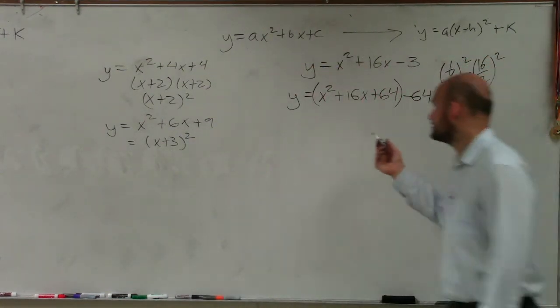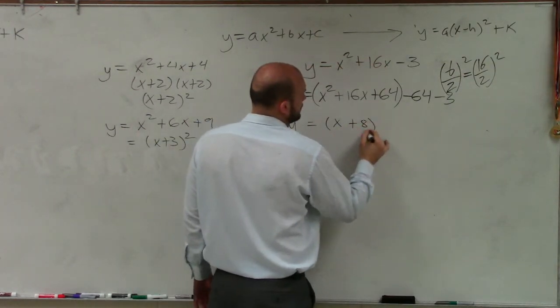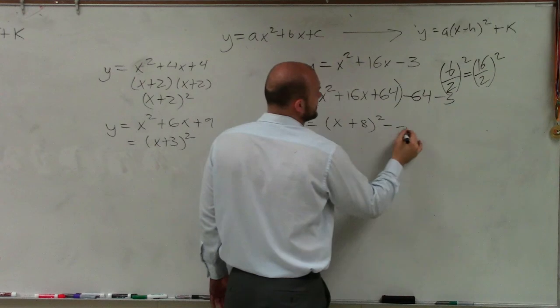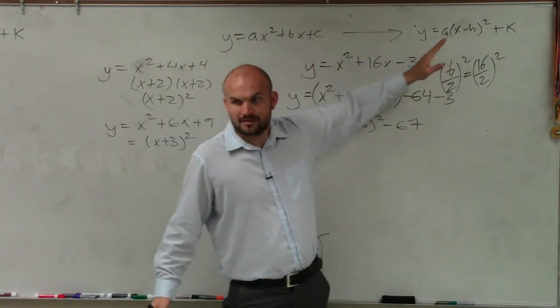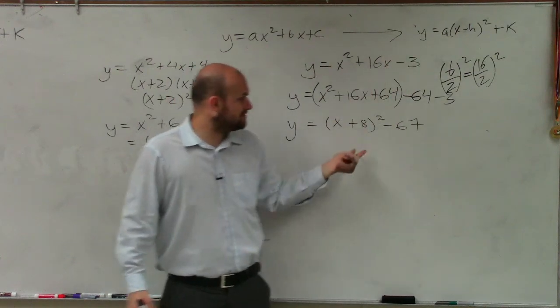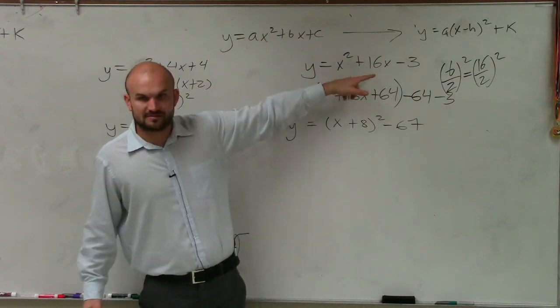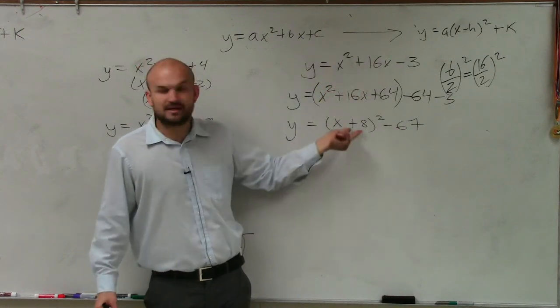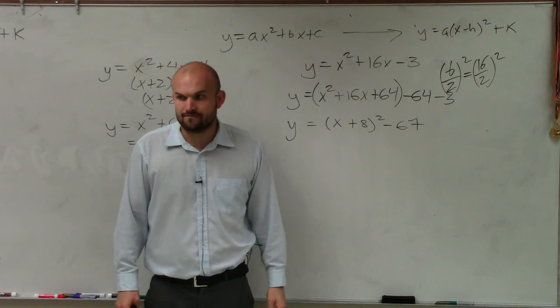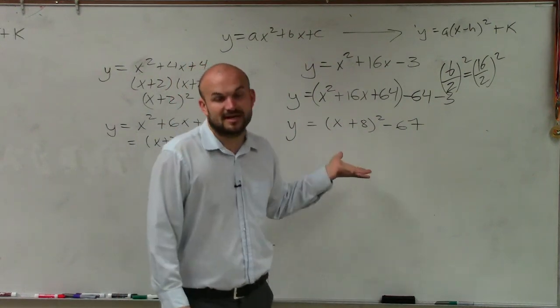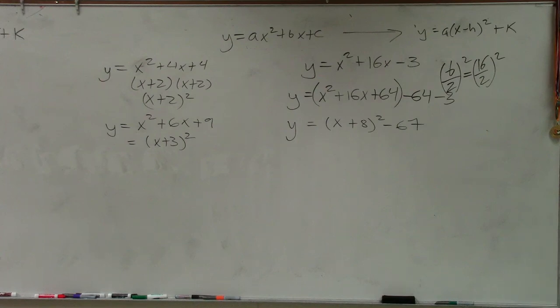So now I rewrite this as a binomial squared. And this becomes negative 67. Is this now in my vertex form? Yeah. Is it very easy for me to find the vertex? Is it much harder to find the vertex in this equation? Yeah. But now, by completing the square, it's in vertex form. It's easy to complete the equation, right? And I could also write this as a conic section and then find the p value, which would be a little different. But that's where we're at with that.